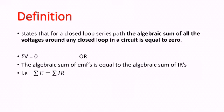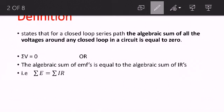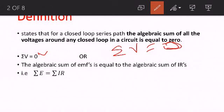Hello everyone. In this video, we are going to be looking at Kirchhoff's voltage law for DC circuits. We start with the definition: it states that for a closed loop series circuit, the algebraic sum of all the voltages around any closed loop in a circuit is equal to zero. There is another way you can define this — that the algebraic sum of EMFs is equal to the algebraic sum of IRs — and this is what I'm going to be using to teach in this video.